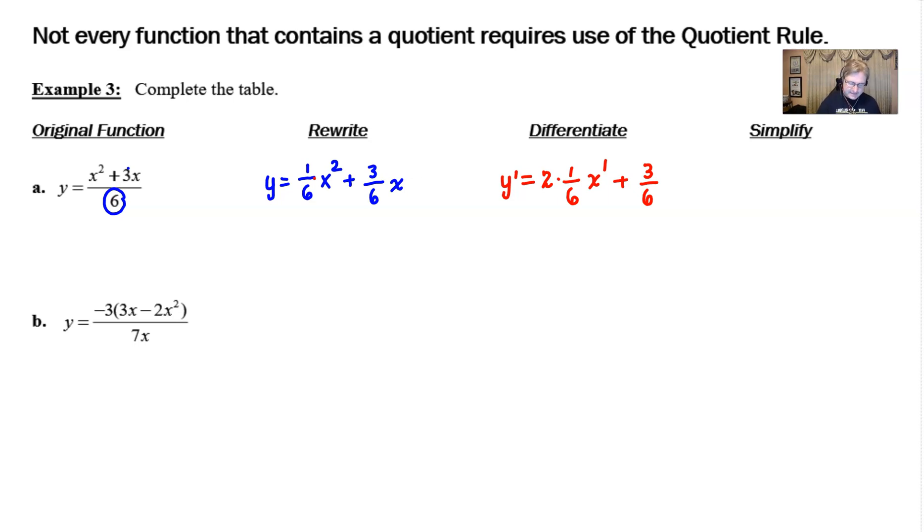And then finally, to simplify, you just basically write this a little bit differently. Two times one-sixth would be the same as one-third. Then you have your x to the first power. Don't need to write that one exponent. And then I can take three over six and reduce it to be one over two. And that's one of many ways that you could express your final answer.